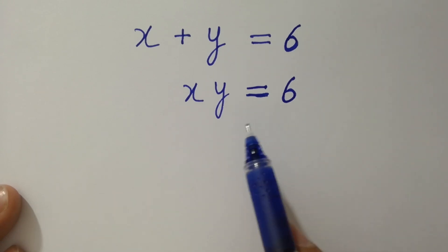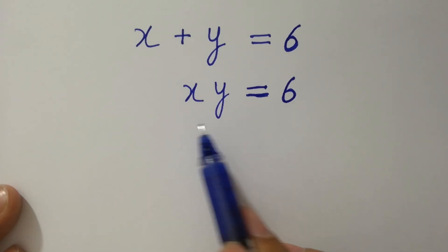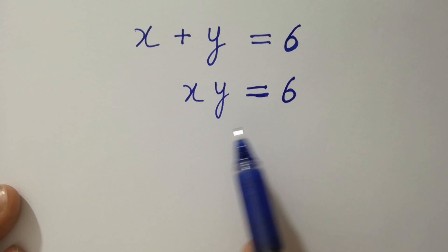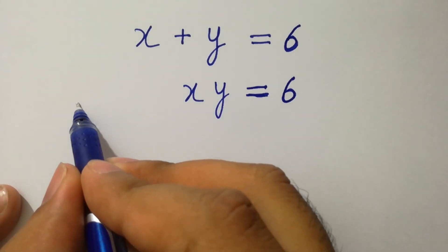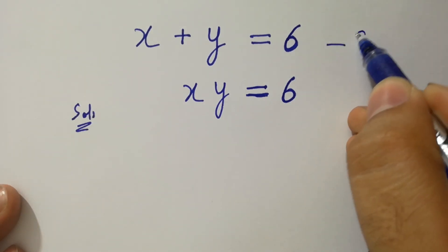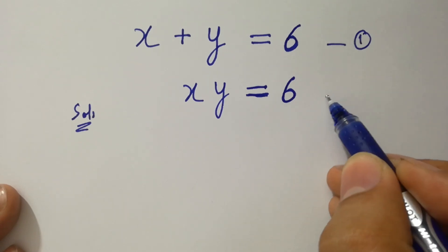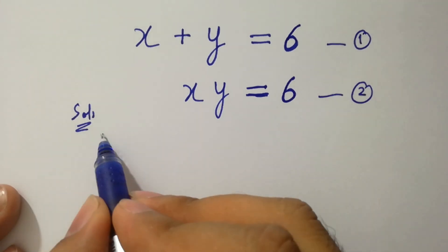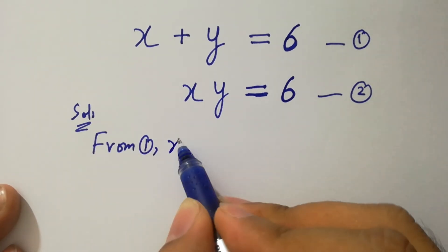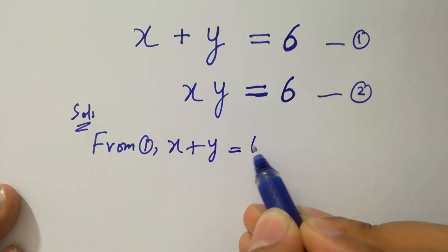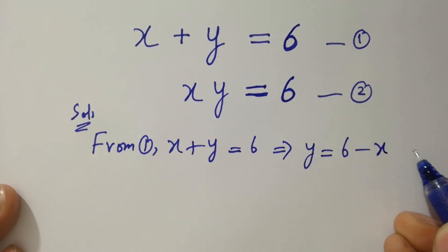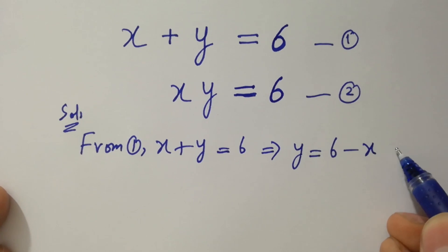Hello friends, find the value of x and y if x plus y equals 6 and xy equals 6. Let's have a solution. Let x plus y equal to 6 be the first equation, and xy equal to 6 be the second equation. From the first equation, x plus y equals 6, so y equals 6 minus x. Let's call this the third equation.